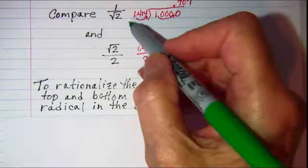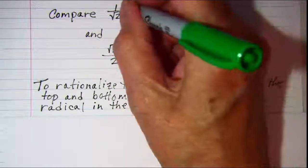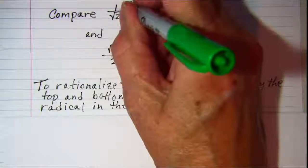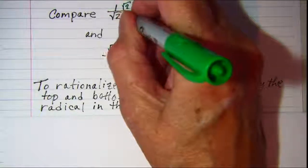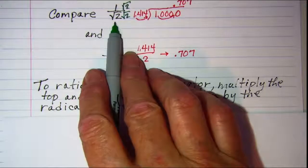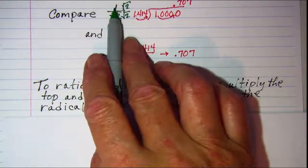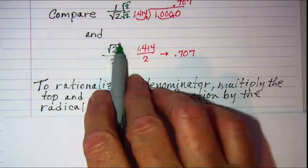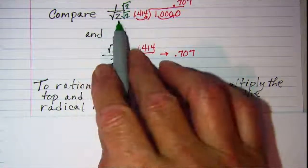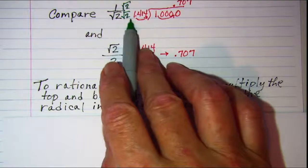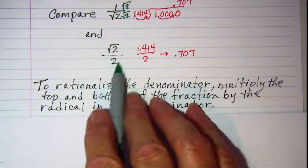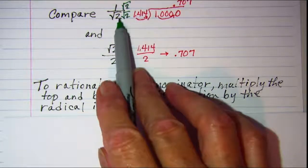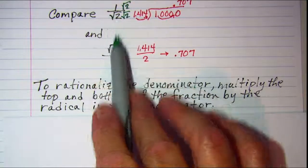So for this fraction, if I multiplied the top and the bottom by the square root of 2, which is the radical that's in the denominator, we would get 1 times the square root of 2 is square root of 2. And then square root of 2 times square root of 2 is 2. So these two fractions are equivalent fractions.